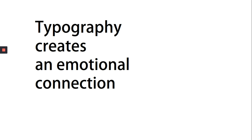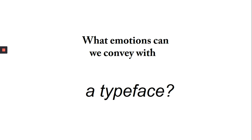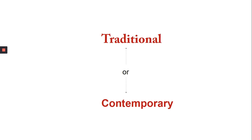What you need to do first is understand what type of emotion you want to convey, and this is probably the hardest question to answer. We will now look at two kinds of typefaces — traditional and contemporary — and understand that the first one can communicate a sense of tradition, sophistication or luxury, and the second one can look modern.